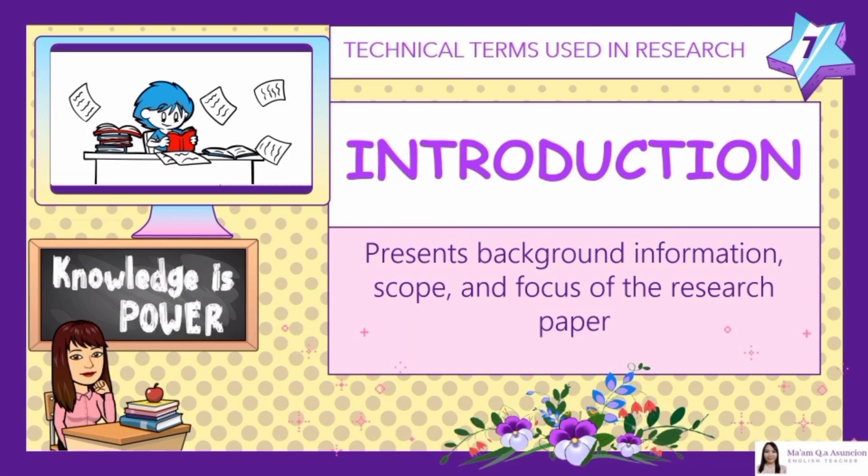Number 7: Introduction. Presents background information, scope, and focus of the research paper. The introduction is your opportunity to show readers and reviewers why your research topic is worth reading about and why your paper warrants their attention. The introduction serves multiple purposes: it presents the background to your study, introduces your topic and aims, and gives an overview of the paper. A good introduction will provide a solid foundation and encourage readers to continue on to the main parts of your paper — the methods, results, and discussion.